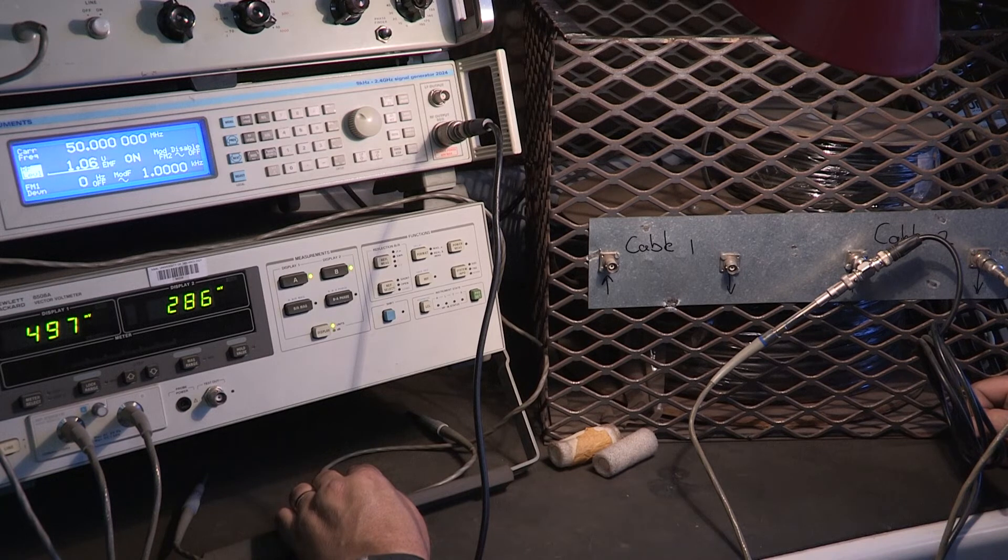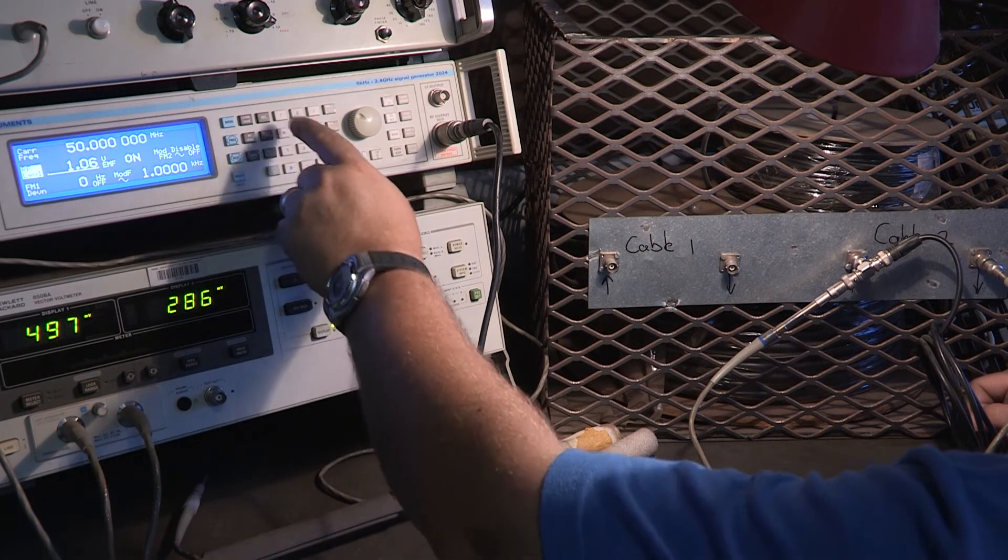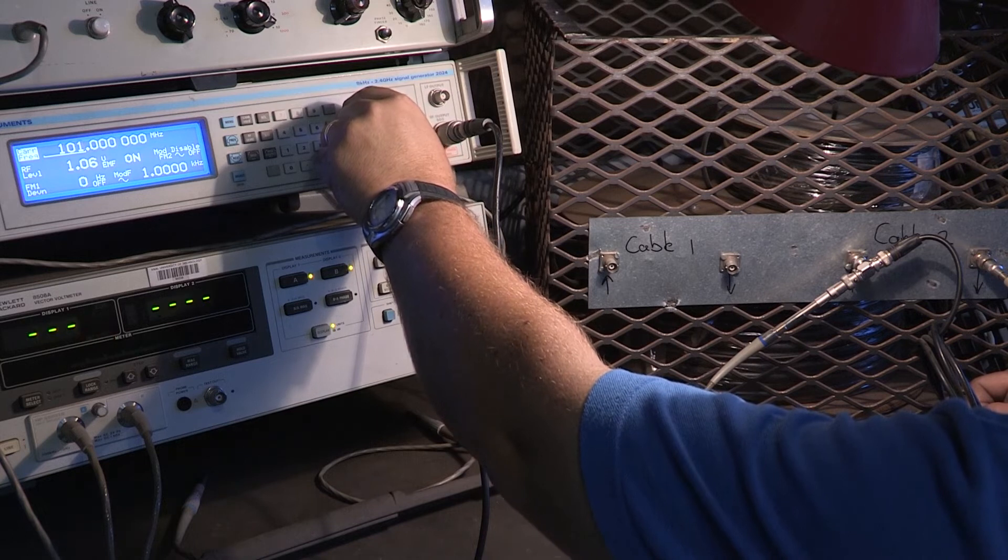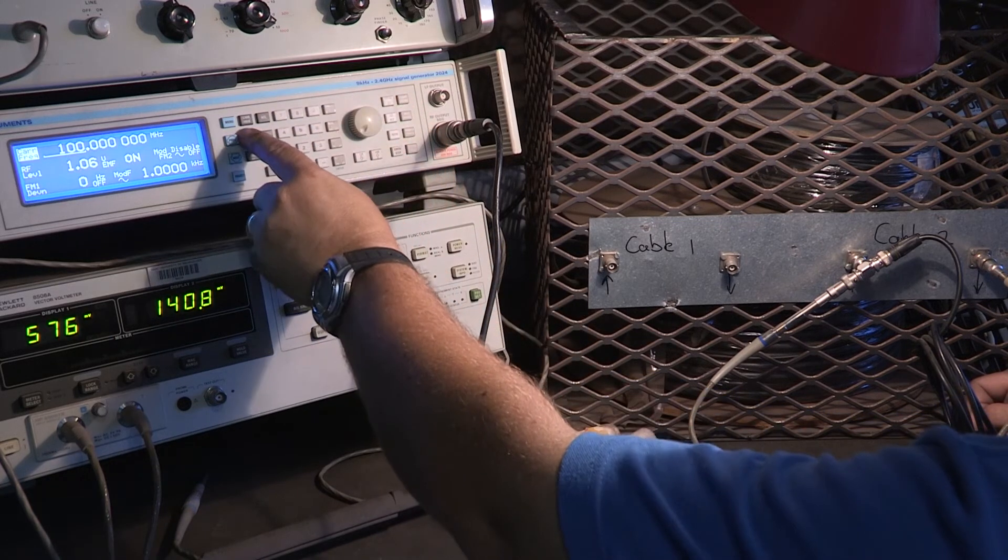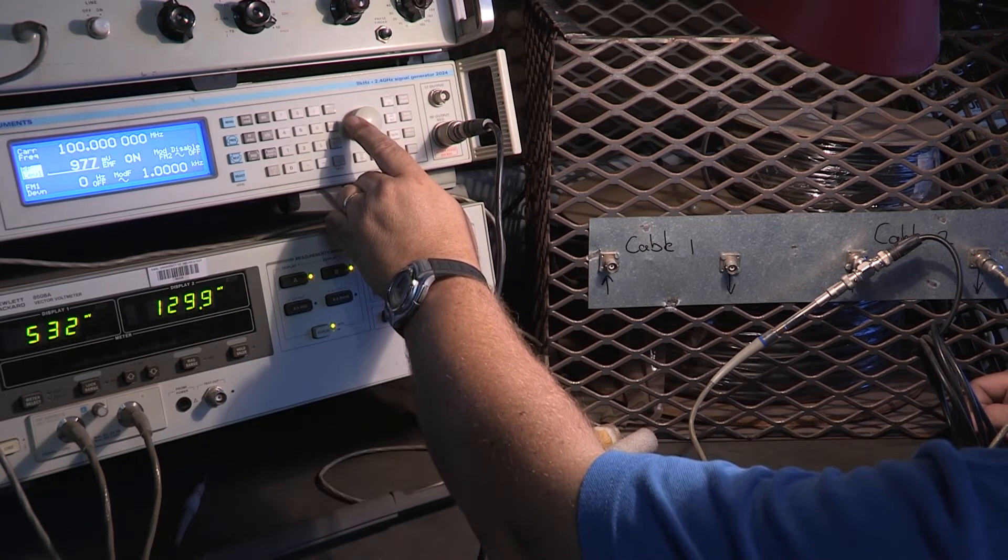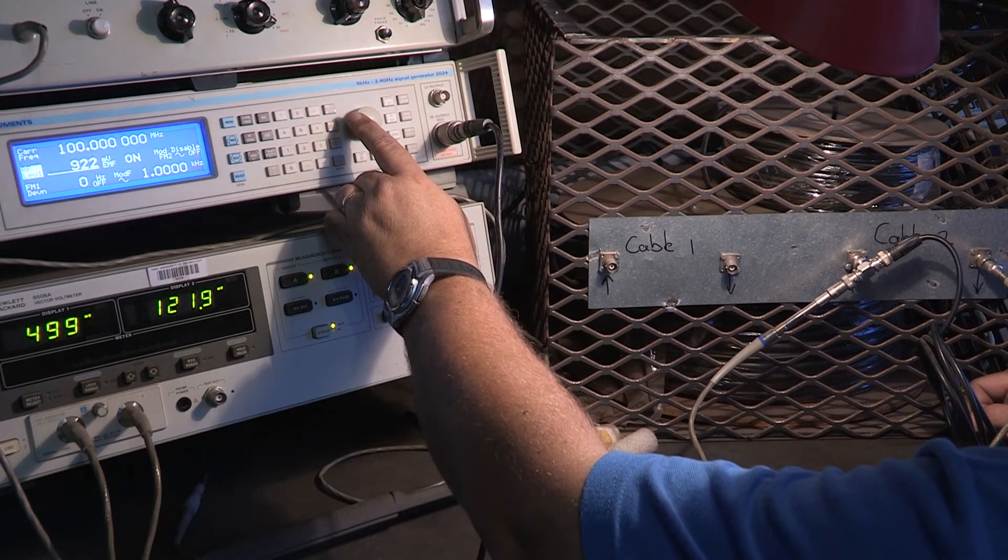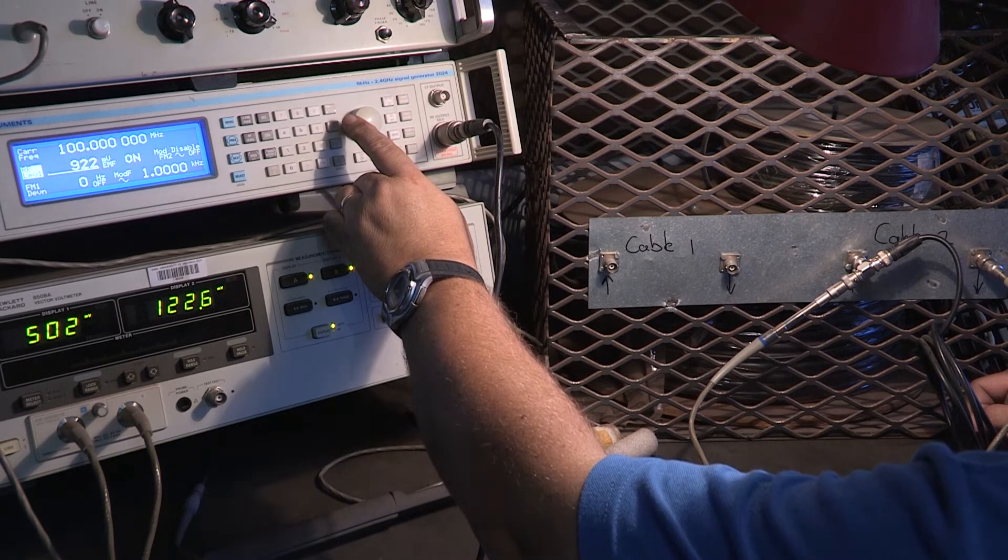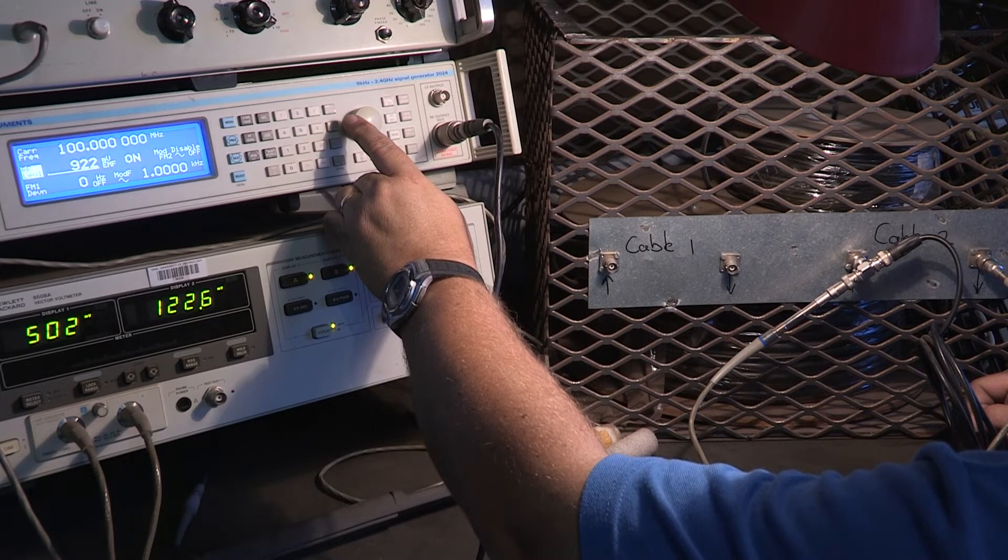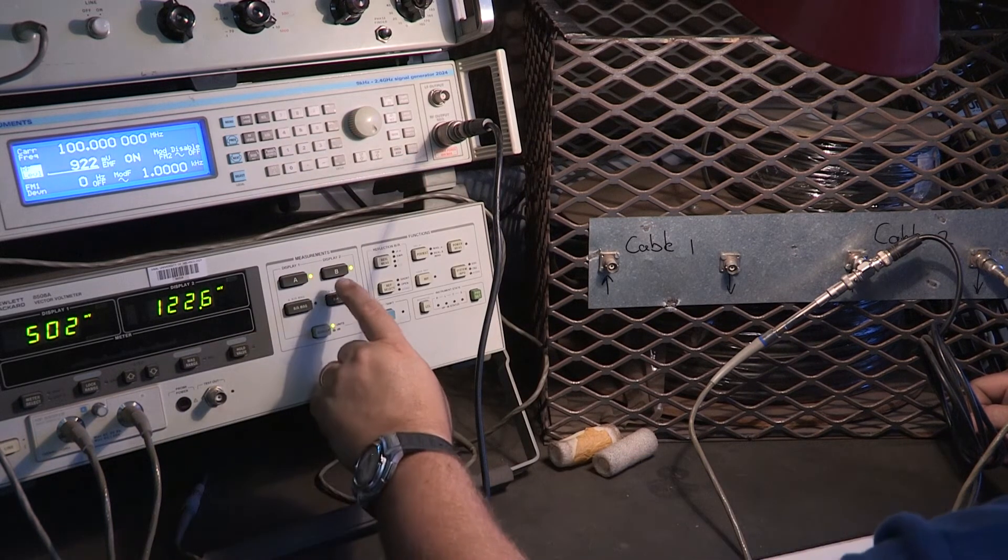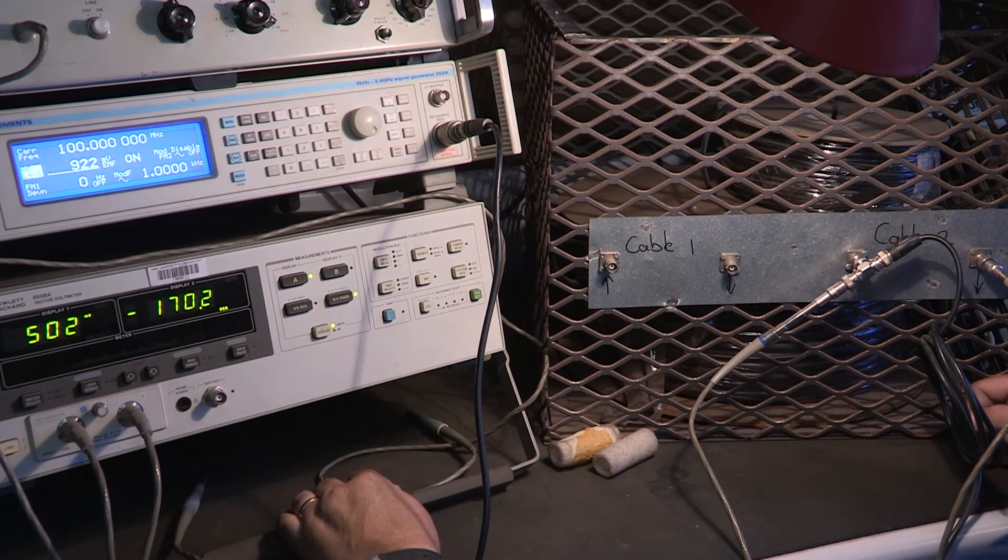Second frequency, 100 megahertz. Make sure that you are putting on channel A the same going into the cable, 500 millivolts, or as close as you can. This one is very finicky, but it works. And now I've got 122.6 and the phase angle minus 170.2.